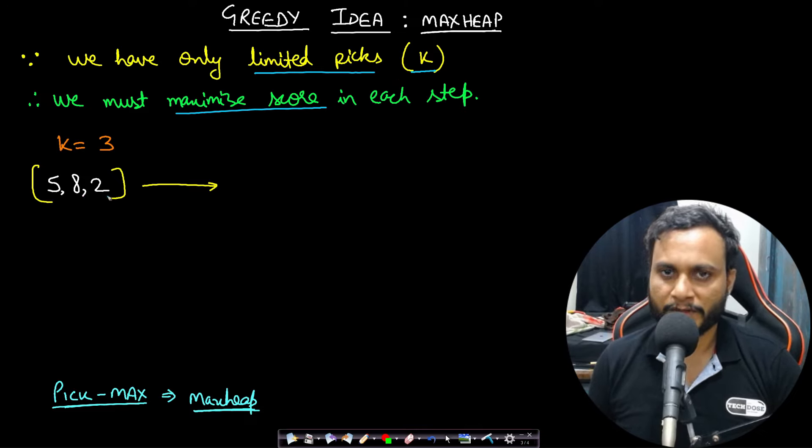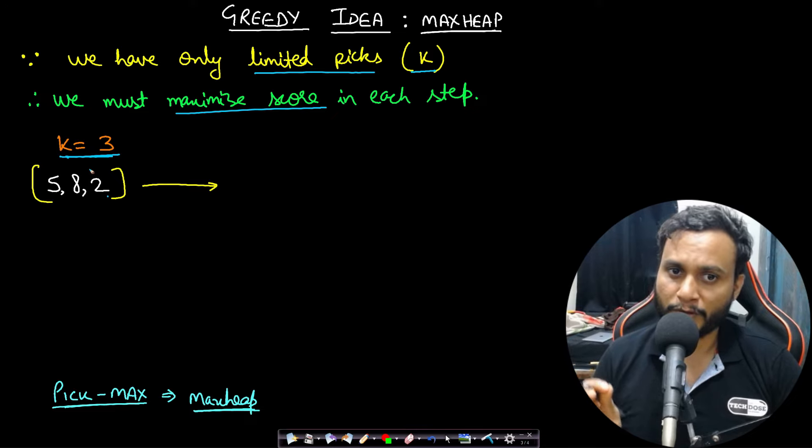We are starting with [5,8,2]. Let's say we are taking the same example and if we have to do it in k equals 3 steps, then it is always optimal to pick the maximal value. Because if you don't pick the maximal value, you will not get the maximum score. Since we have limited steps and we are never going to run out of items, always pick the max value.